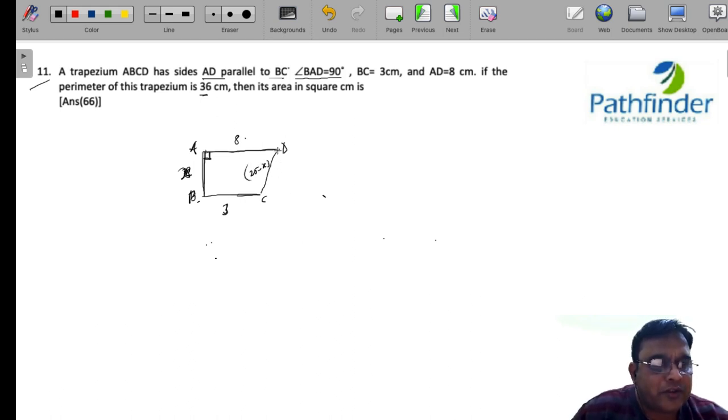To solve this question, let us just complete this as a rectangle. So, I join BC extended and I drop a perpendicular from D. Let us call this point as P.